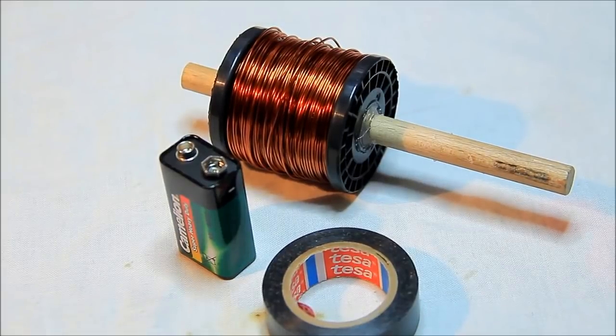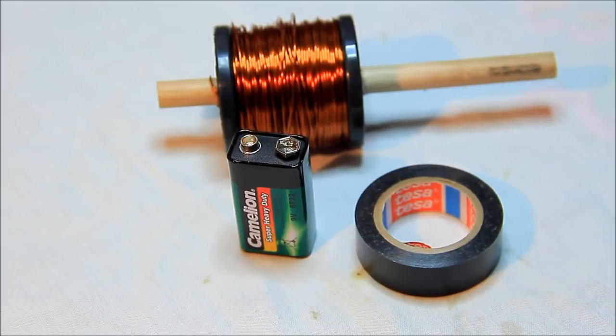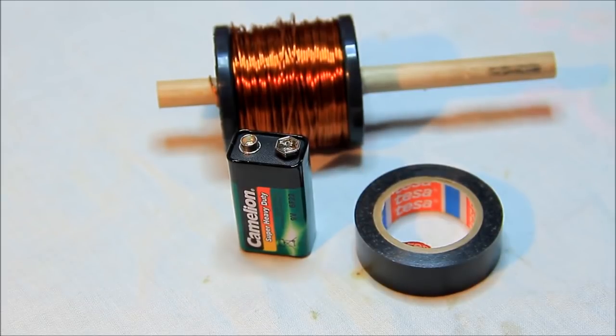First we want to make the main transmitting coil. We only need three components for that: a 9V block, a copper wire with 0.7mm diameter, and electrical tape.